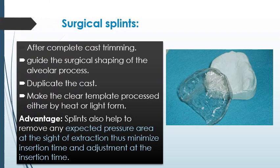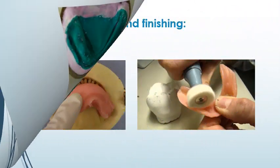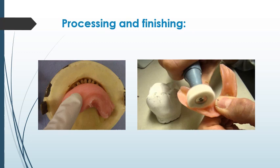A surgical stent, after complete cast trimming, guides the surgical shaping of the alveolar process. Duplicate the cast and make a clear template processed either by heat or light. The advantages of the stent are that it helps to remove any expected pressure areas at the site of extraction, thus minimizing insertion time and adjustments. Waxing and flasking are performed using the usual method followed in conventional denture construction. Processing is also the same as conventional denture construction.